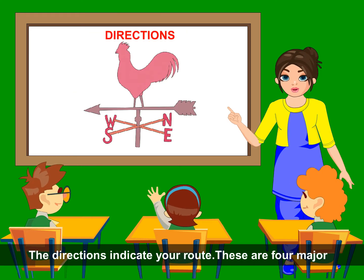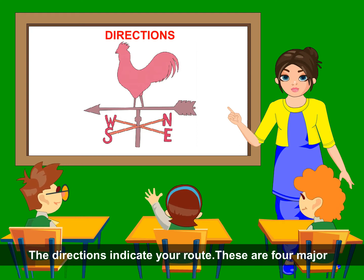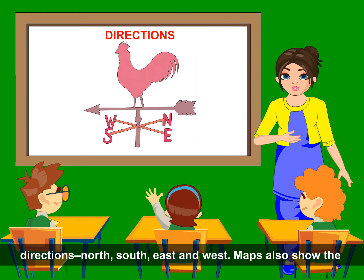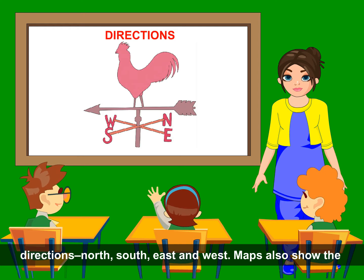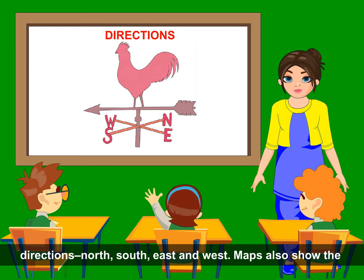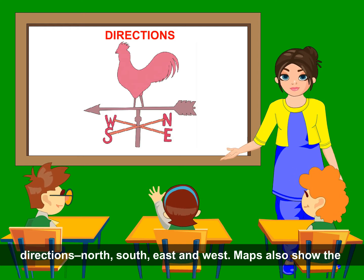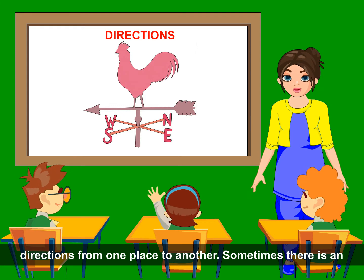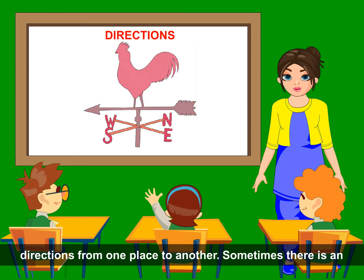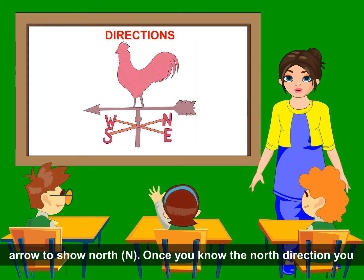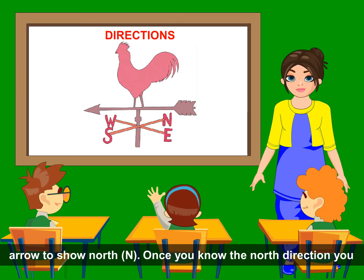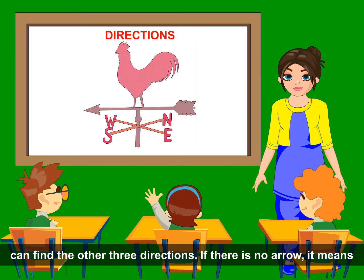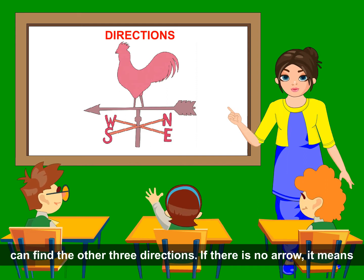Directions indicate your route. There are four major directions: North, South, East and West. Maps also show the direction from one place to another. Sometimes there is an arrow to show North, or 'N'. Once you know the North direction, you can find the other three directions.